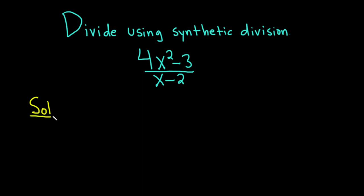The first step in synthetic division is to look at the denominator and switch the sign. Because we have a minus 2, we want to put a plus 2 here and draw a little bracket. Then you want to write the coefficients of the numerator. You have to be careful here because we're missing a power of x. We want to think of the numerator as 4x squared plus 0x minus 3.